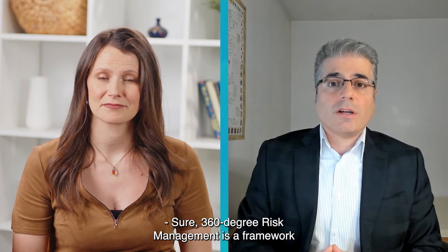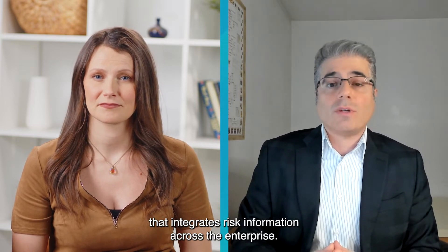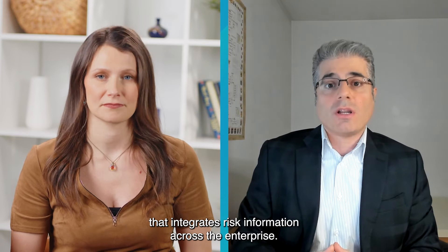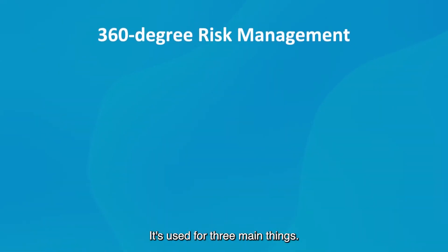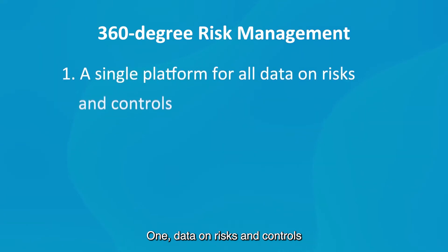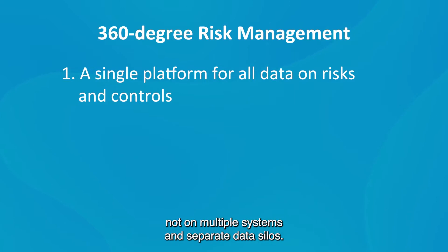360-degree risk management is a framework that integrates risk information across the enterprise. It's used for three main things. One: data on risks and controls is managed on a single platform, not on multiple systems and separate data silos.